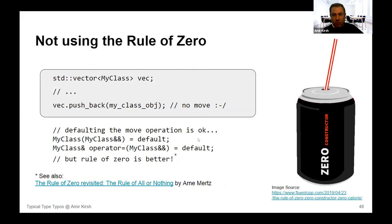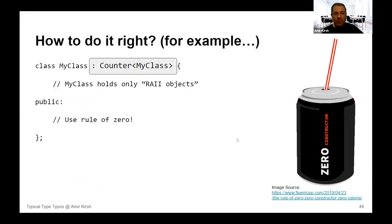The rule of zero says either have nothing or have all. If you need a copy constructor for something like a static counter, consider using CRTP to separate the counter responsibility from the class fields, allowing the class itself to use the rule of zero. If you find yourself not using the rule of zero despite having no resource management, something is not right — check if you can separate into different roles.